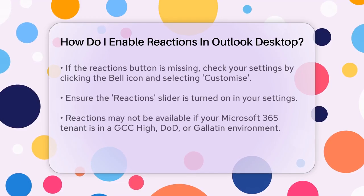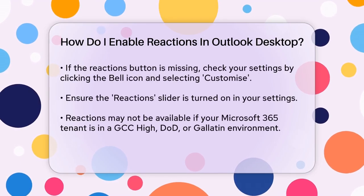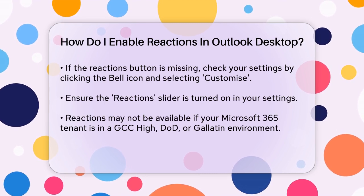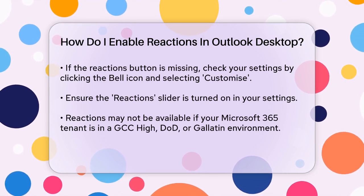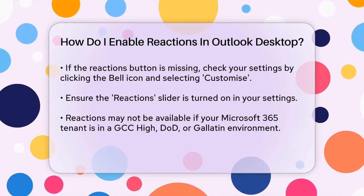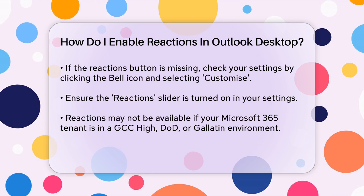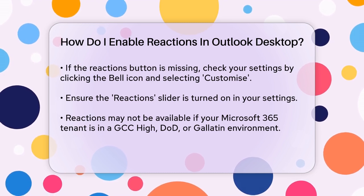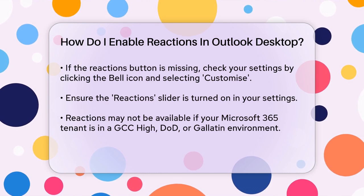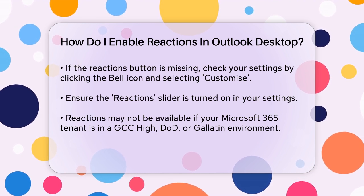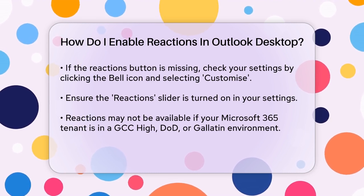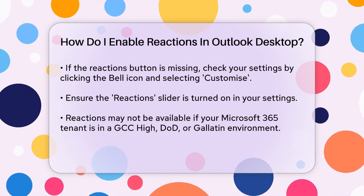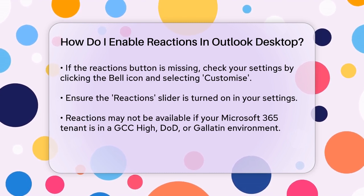If you don't see the reactions button, you might need to check your settings. Click the bell icon in the top right corner of your Outlook screen, then click Customize. Ensure the slider for reactions is turned on. If you're still not seeing the reactions feature, it could be because your Microsoft 365 tenant is in a GCC High, Government, D2D, or Gallatin China environment — in these cases, the feature is not yet available.